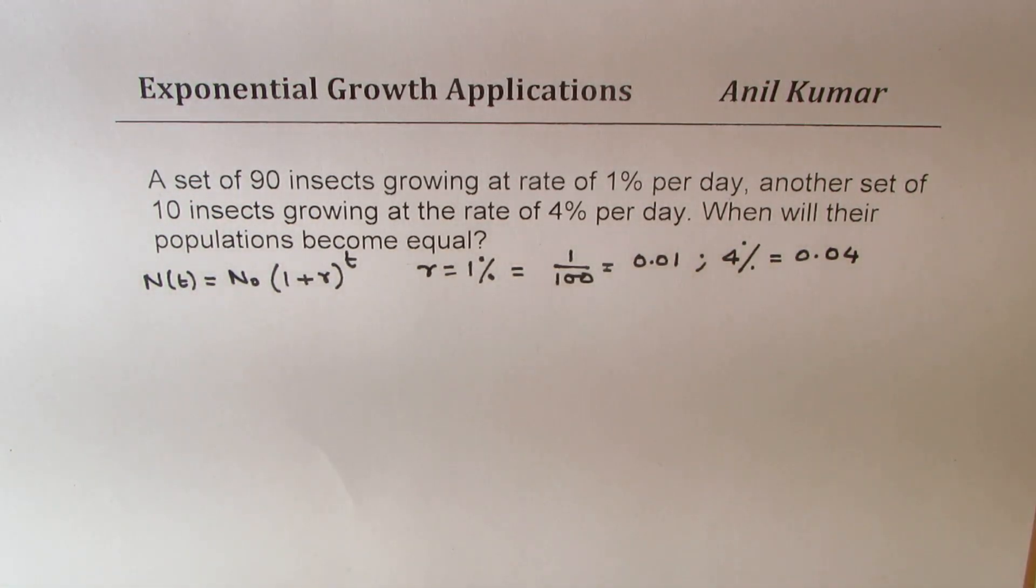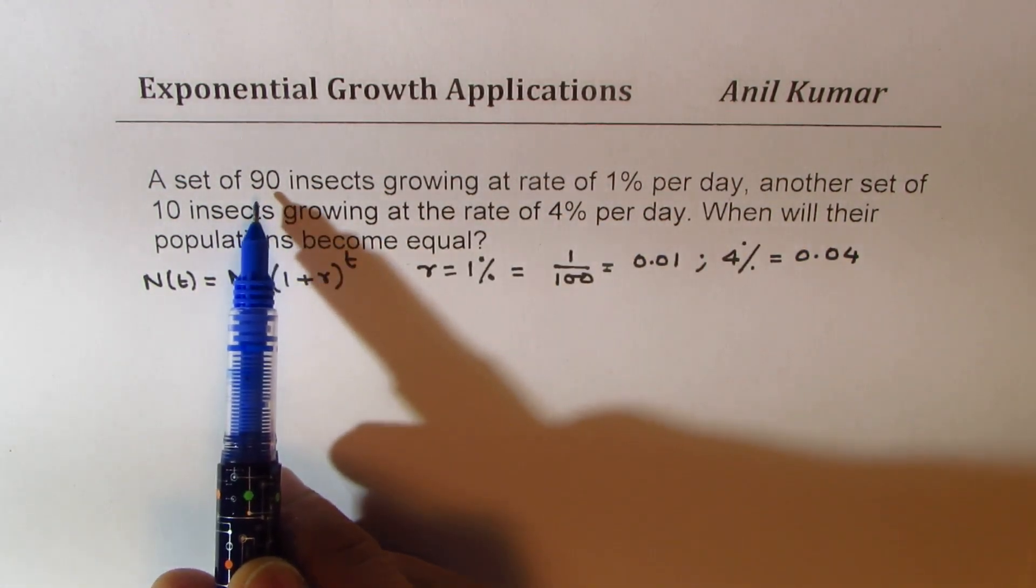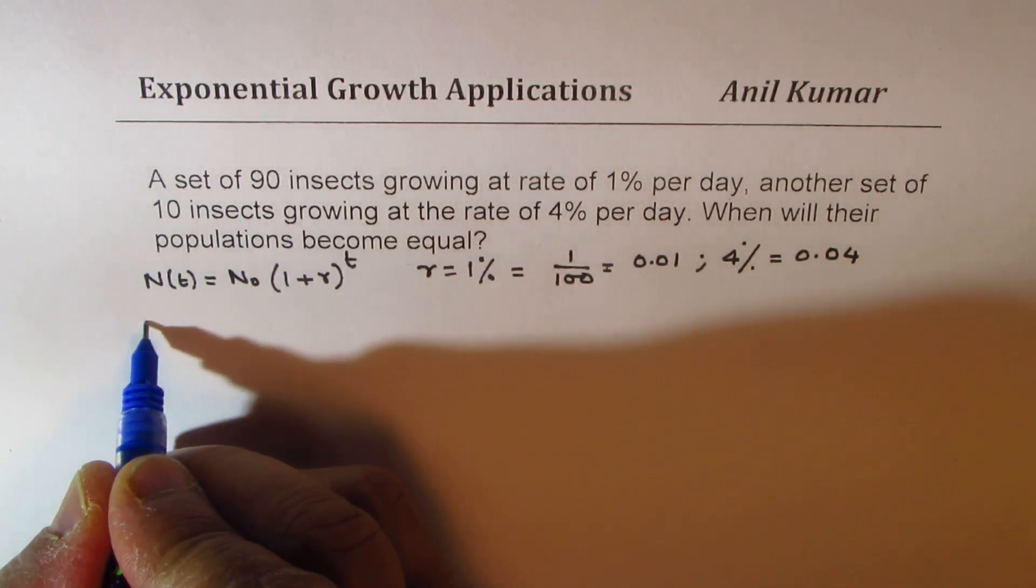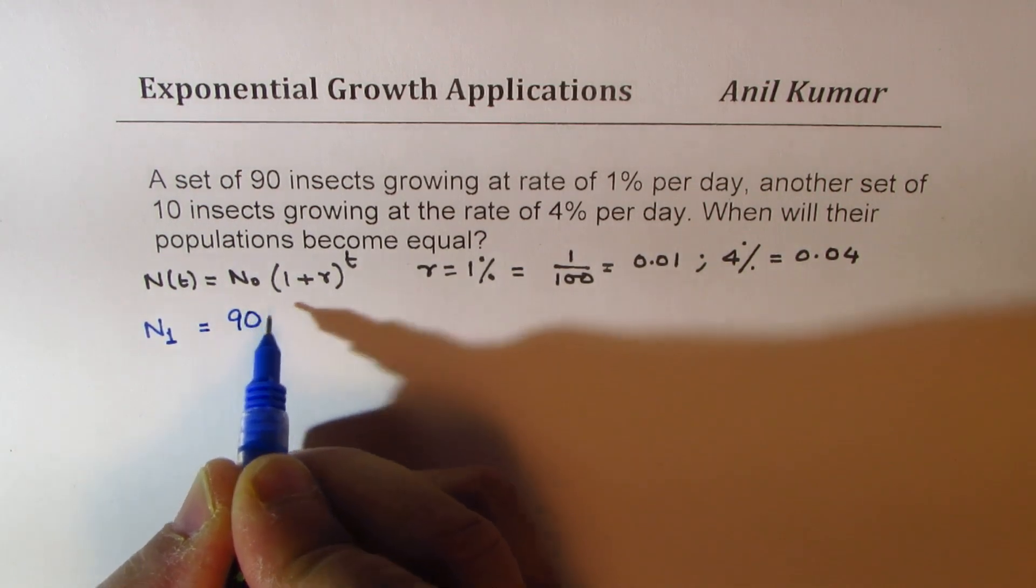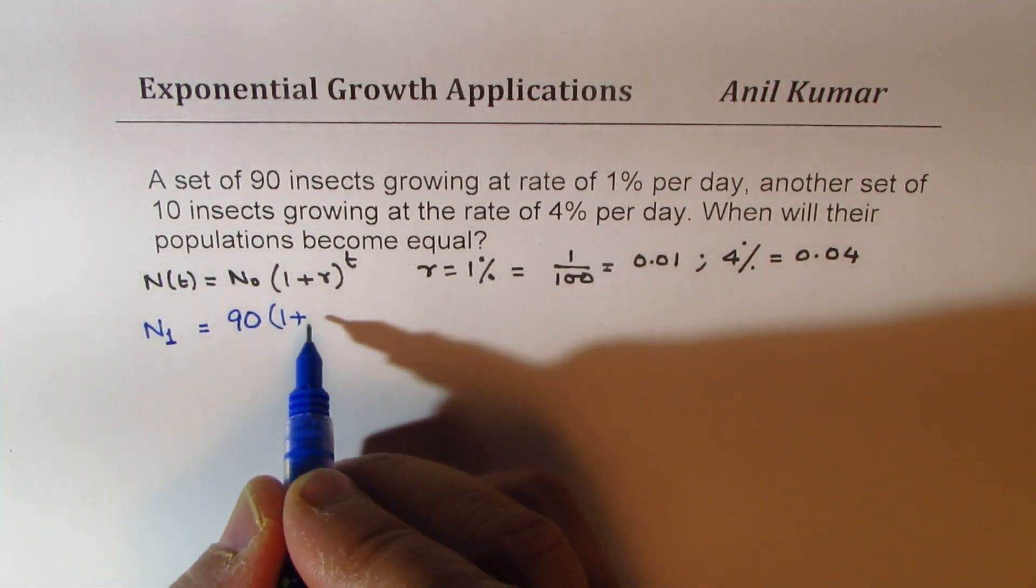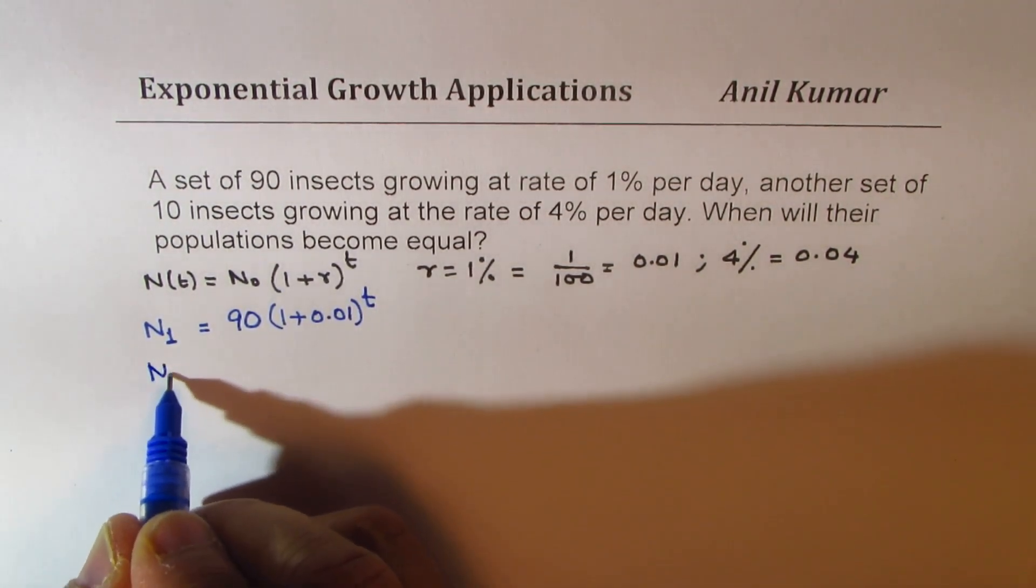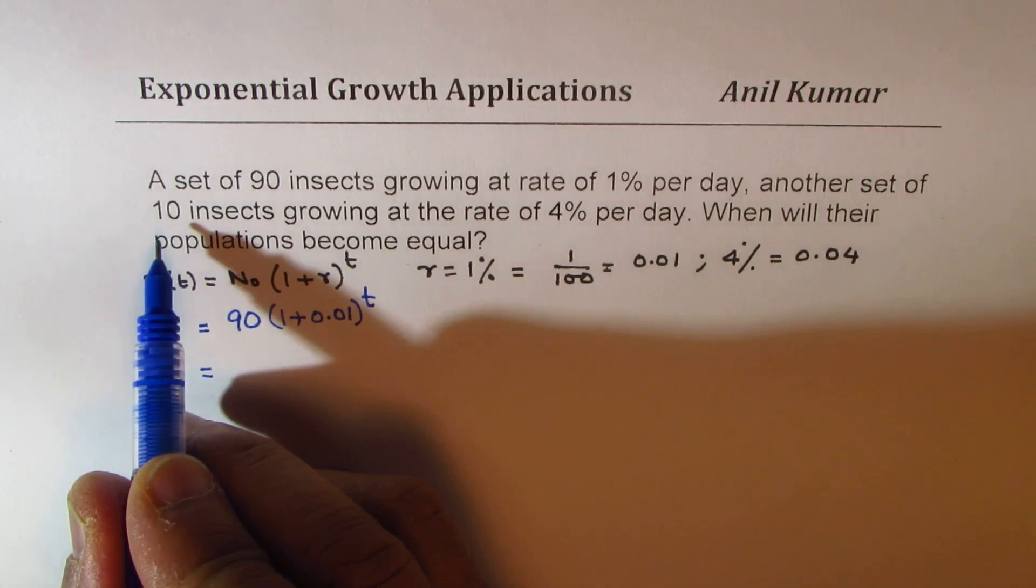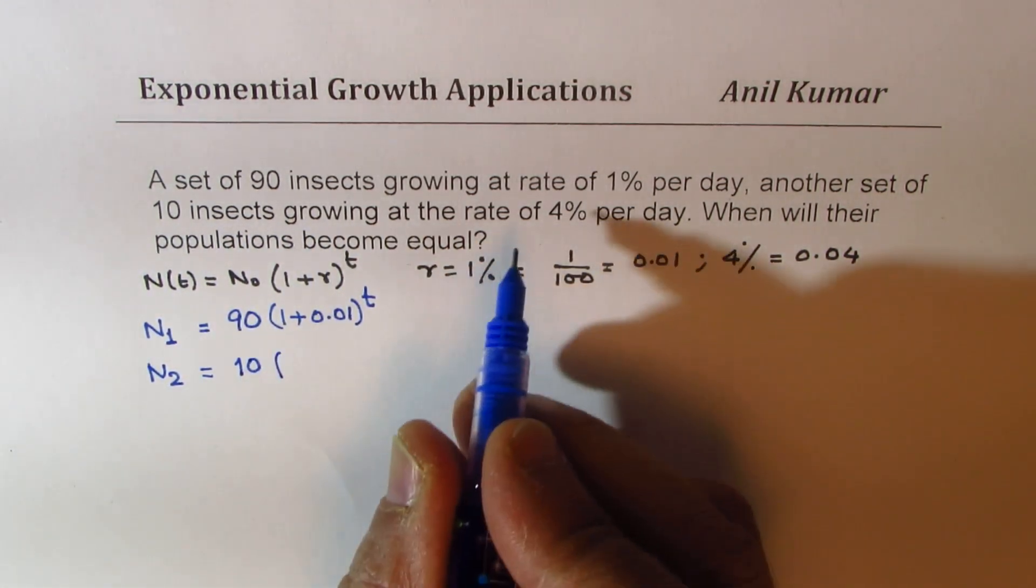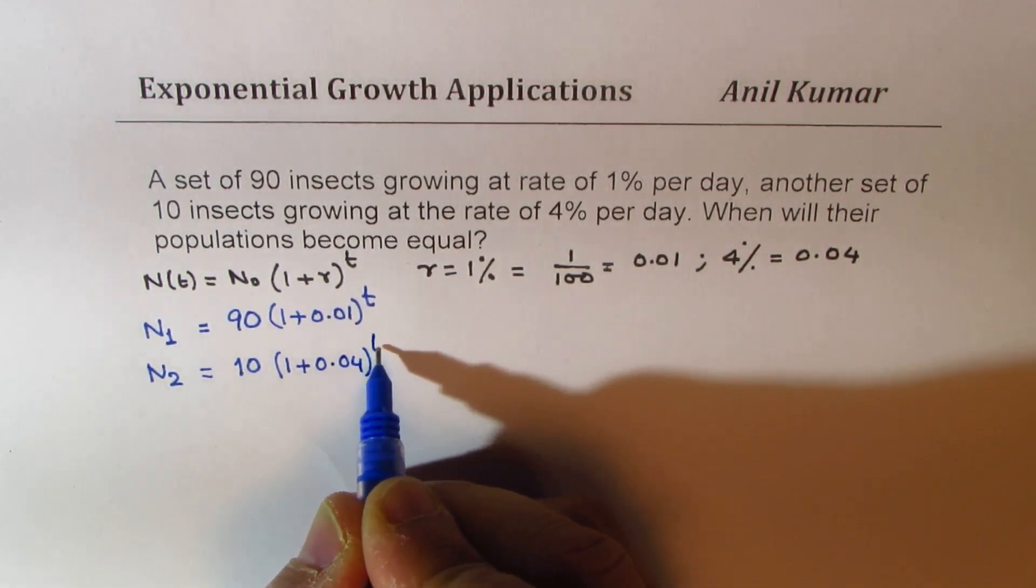Now using this formula, we can write both the equations. The first one: we have 90 insects growing at a rate of 1% per day, so the initial amount is 90. So in first case, we get number of insects N1 equals 90 times 1 plus 0.01 to the power of t. The second equation: the number of insects of the second type, second set of insects, which are 10 insects growing, so 10 is the initial number, at the rate of 4%, 1 plus 0.04 to the power of t.